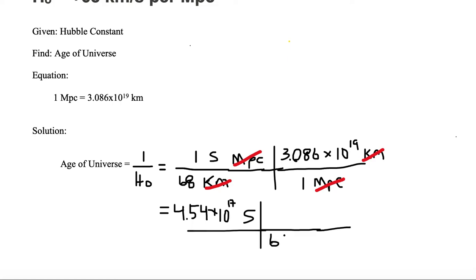So we have 60 seconds in 1 minute. We've got 60 minutes in 1 hour. And we have 24 hours in 1 day. And we have 365 days in 1 year.